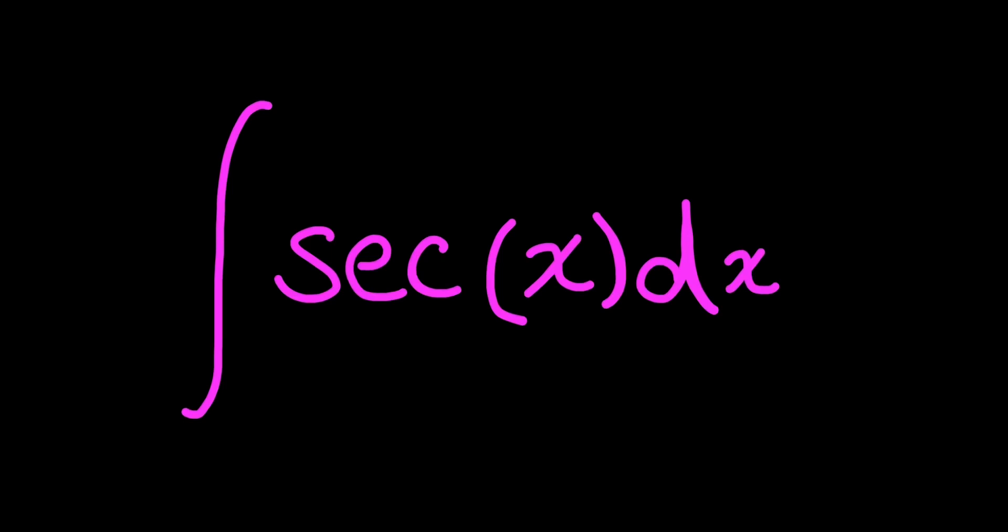Let's compute the integral of secant x dx. Now you might already know what this is equal to, but you might not have seen how to actually go through the integral. I do want to say there are several ways you can approach this. I'm just going to do it in the way that I think is the easiest to remember.